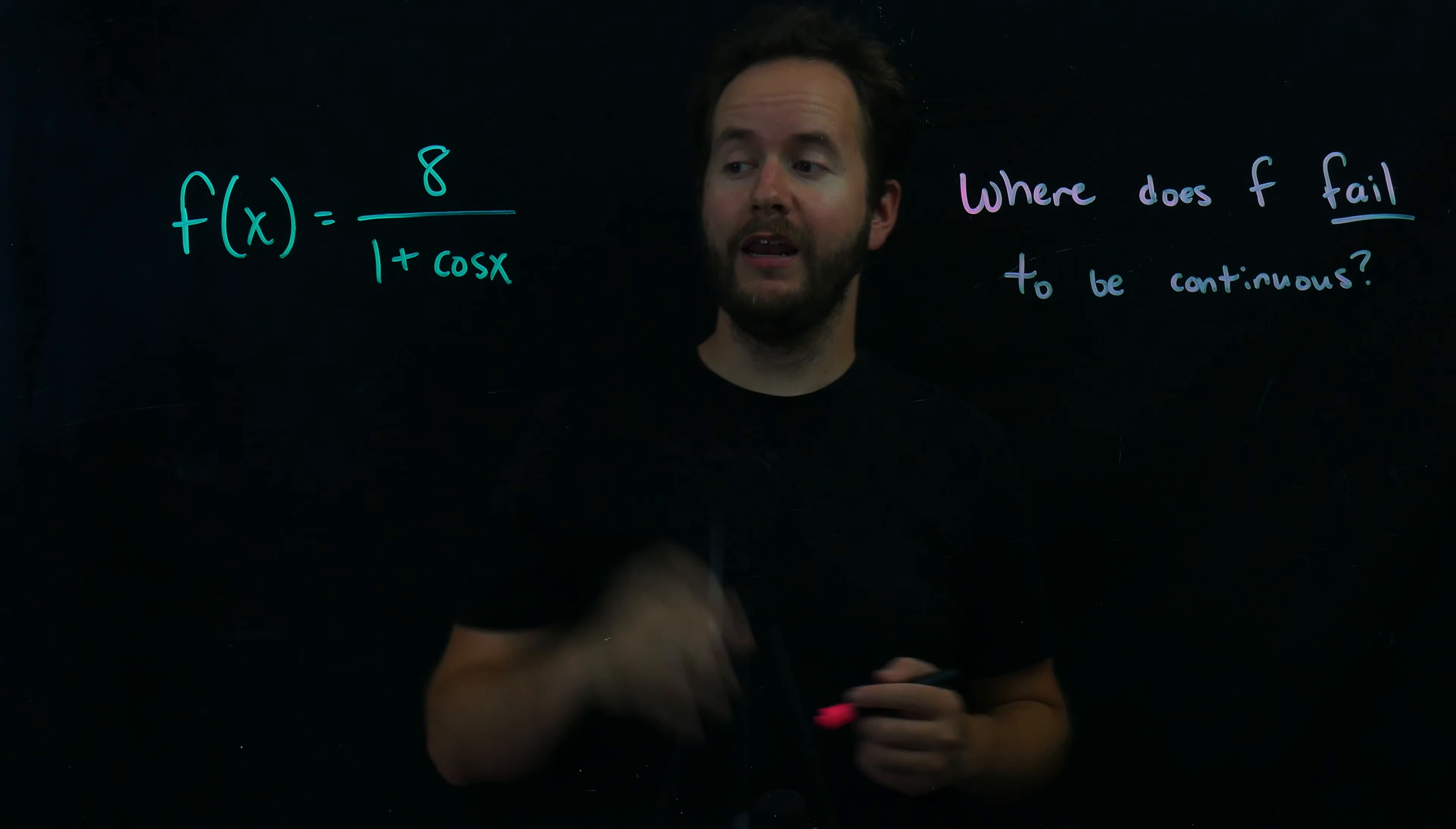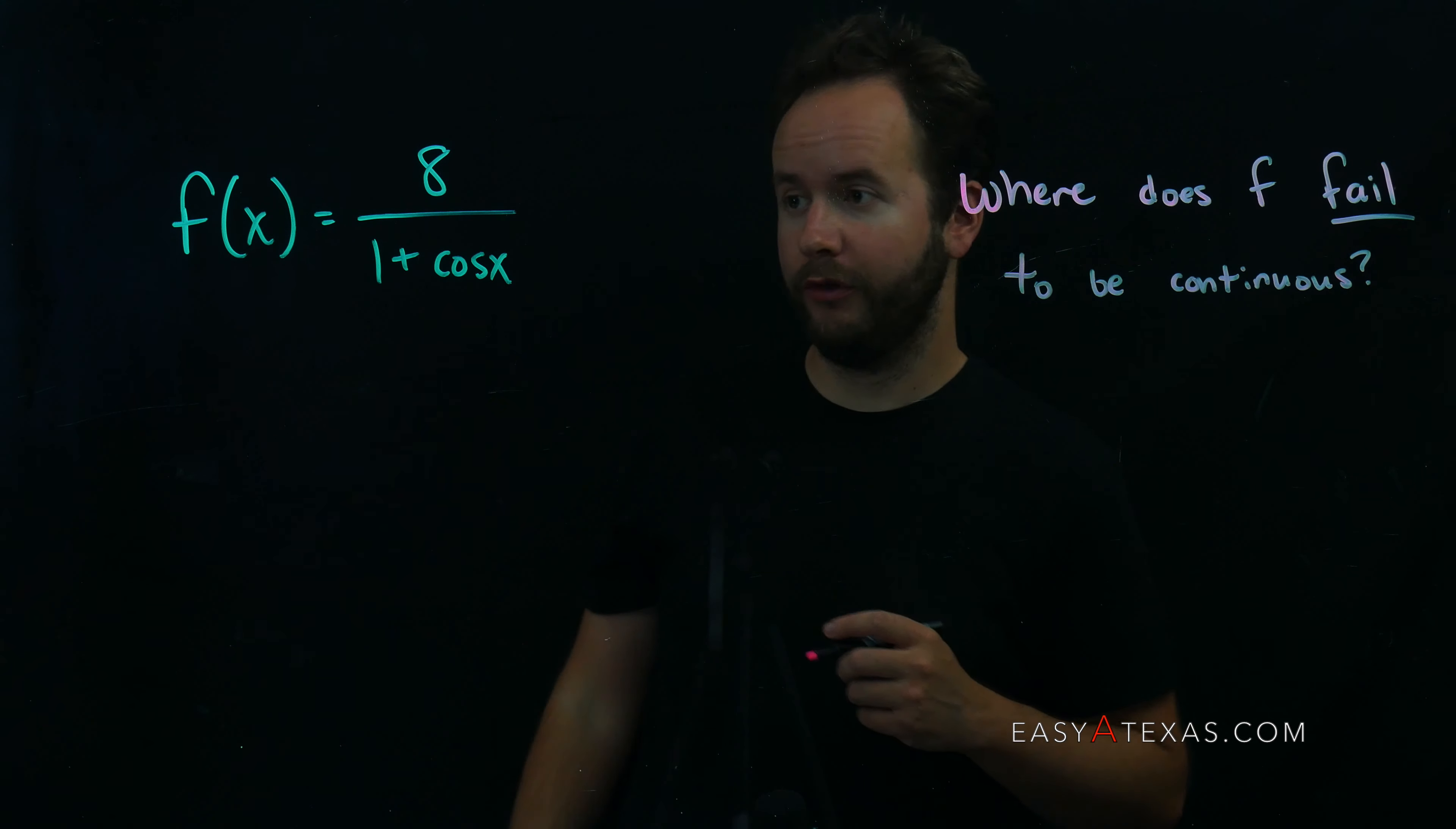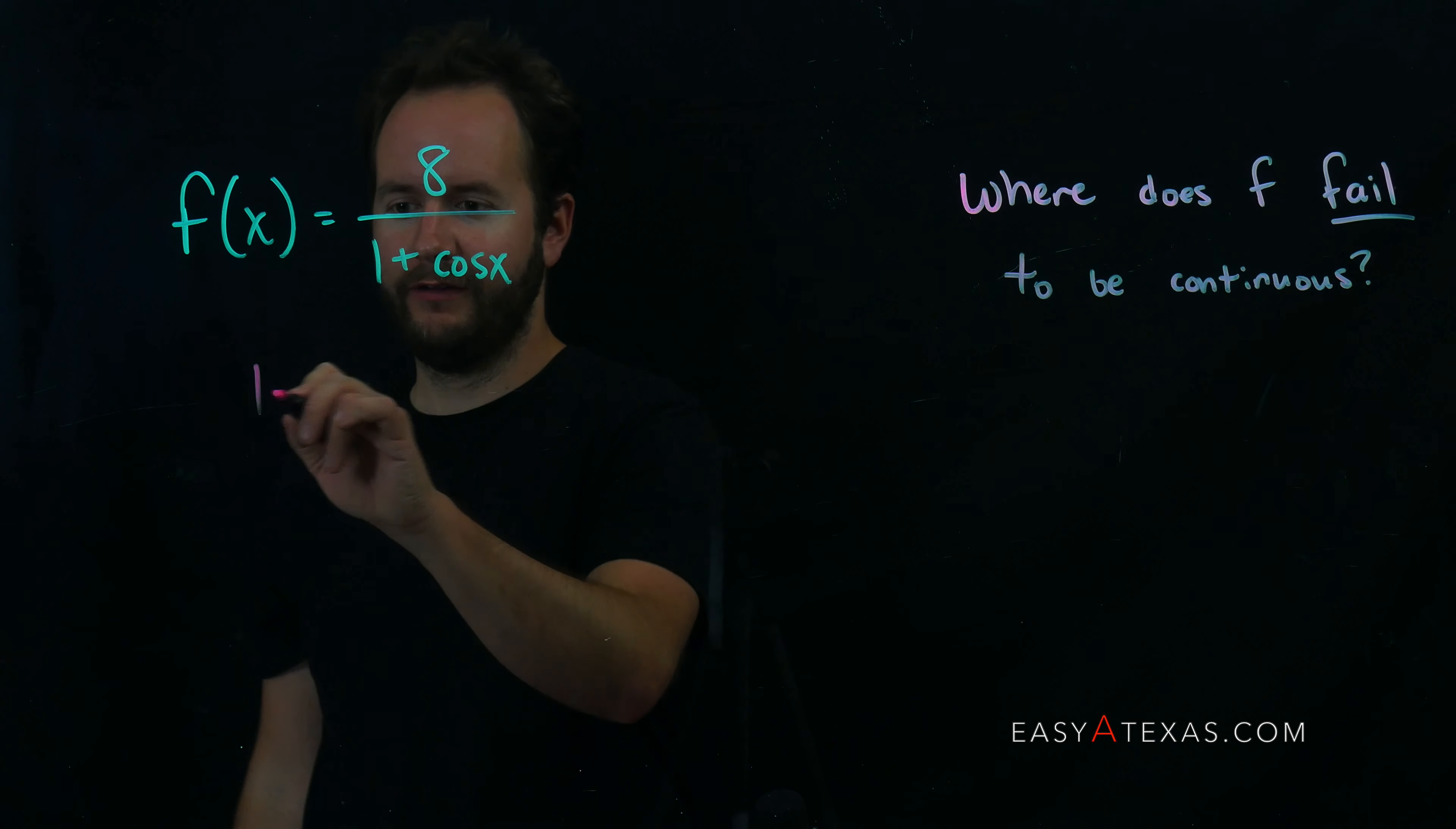Our task for this problem is to figure out where 8 over 1 plus cosine of x fails to be continuous. Now that means I'm going to take a close look at this denominator, 1 plus cosine of x.